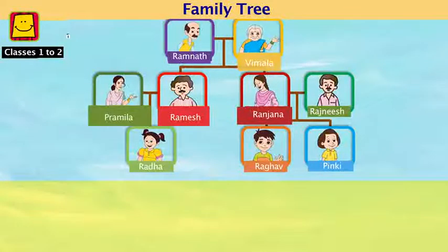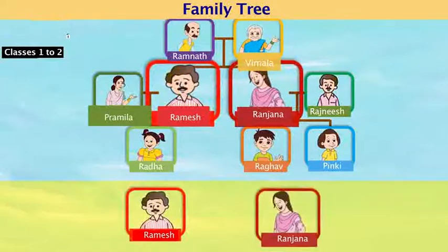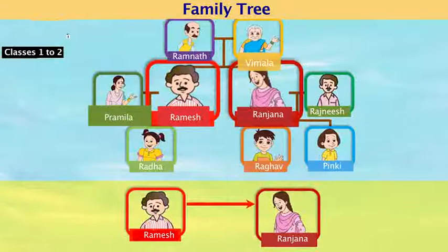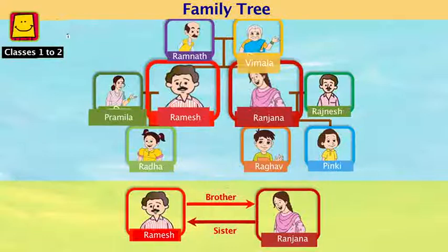And now the last relationship — this is Ramesh and this is Ranjana. Ramesh is Radha's father and Ranjana is Radha's paternal aunt. So what is the relationship between Ramesh and Ranjana? Ramesh would be her brother and Ranjana would be Ramesh's sister. So friends, now it's your turn — do write the names and relationships of your brothers, sisters, and every member of your family. We will meet again. Goodbye!